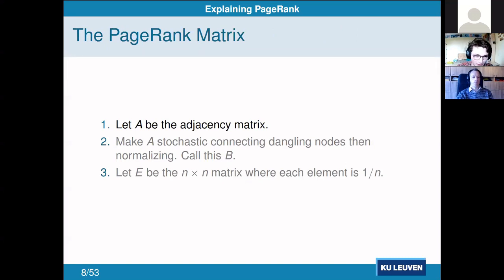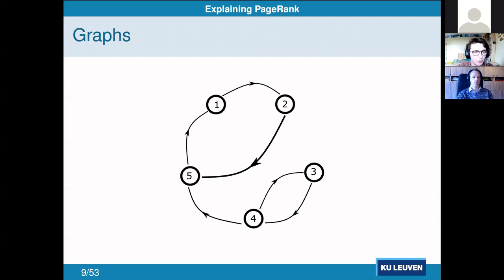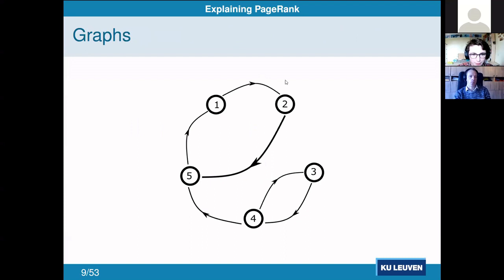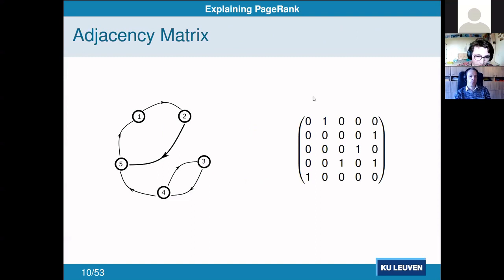First we need the adjacency matrix of our network. Our network is a mathematical graph: nodes are the circles (five of them: one through five), and edges are the arrows connecting nodes — in our internet analogy, nodes are websites and edges are hyperlinks. The adjacency matrix contains a zero if there is no edge from the row-numbered node to the column-numbered node, and a one if there is. For example, there's no edge from node one to itself, but there is an edge from one to two.